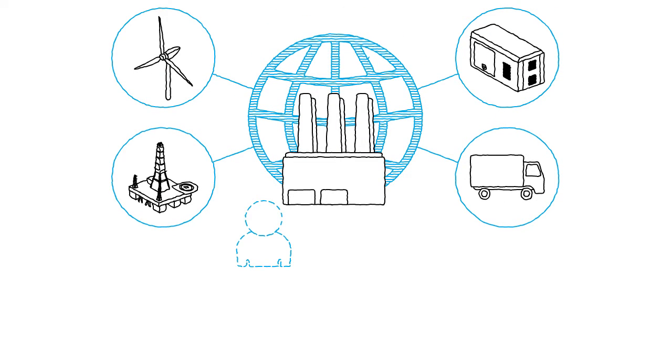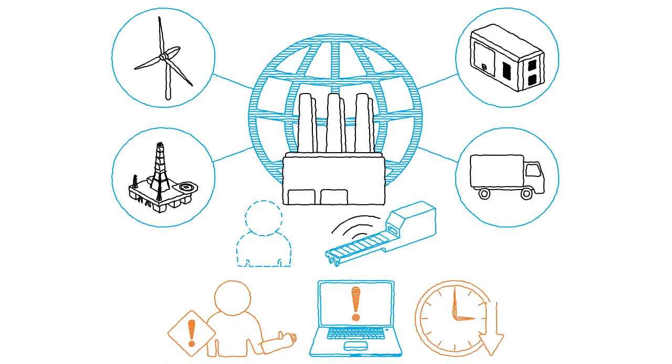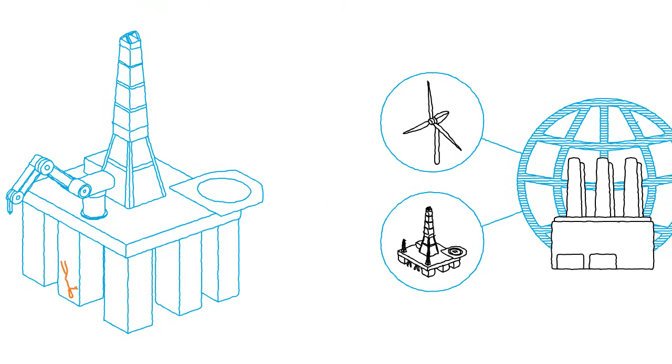IIoT removes humans from many environments and allows machines to act autonomously, reducing risks associated with human injury or human error, system failures, or system downtime. For example, IIoT enabled the oil rig strut repair before it became a catastrophic failure.